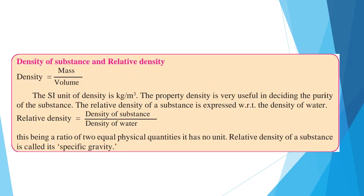Density of Substance and Relative Density. Density is equal to mass upon volume. The SI unit of density is kg per meter cube. The property density is very useful in deciding the purity of the substance. The relative density of a substance is expressed with respect to the density of water. Relative density is equal to density of substance upon density of water.